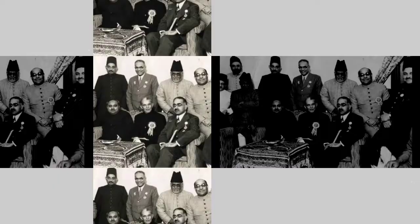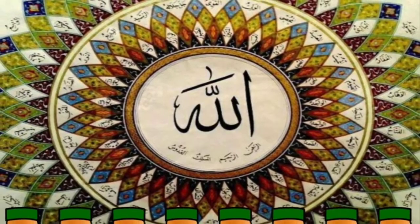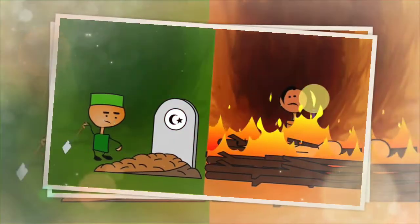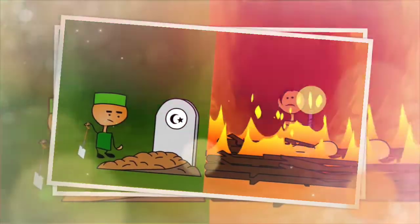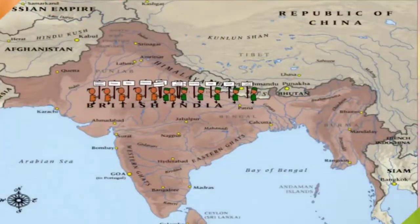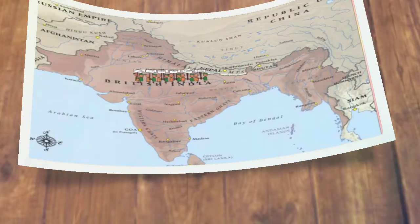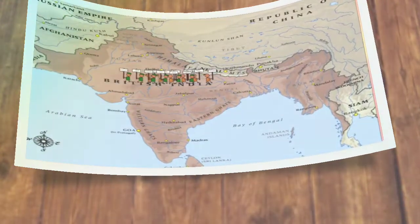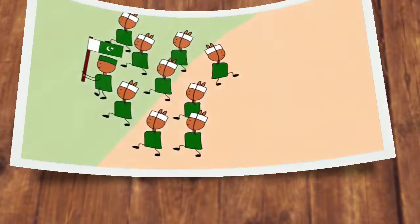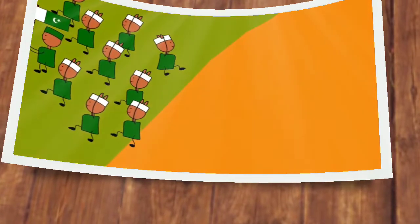Expressing his views during a Muslim League meeting, Jinnah said: 'Hinduism and Islam are not merely two religions but they are two separate social systems. It would be a dream to think that Hindus and Muslims will form a common nation. I want to make it clear that both nations belong to two civilizations, and the foundation of these two civilizations is on such philosophies which are opposed to each other.'